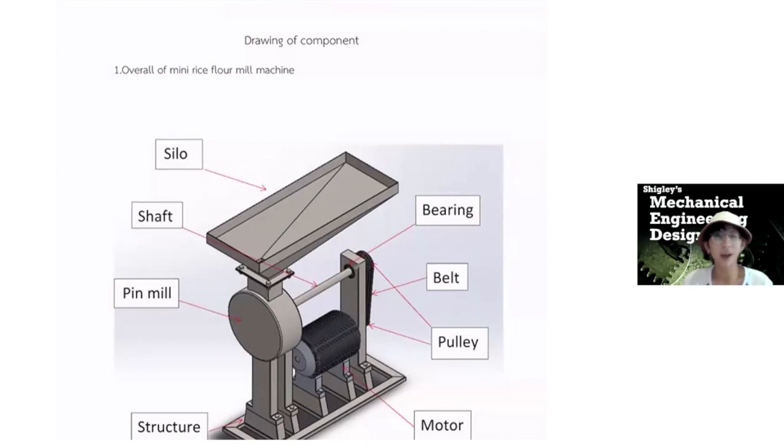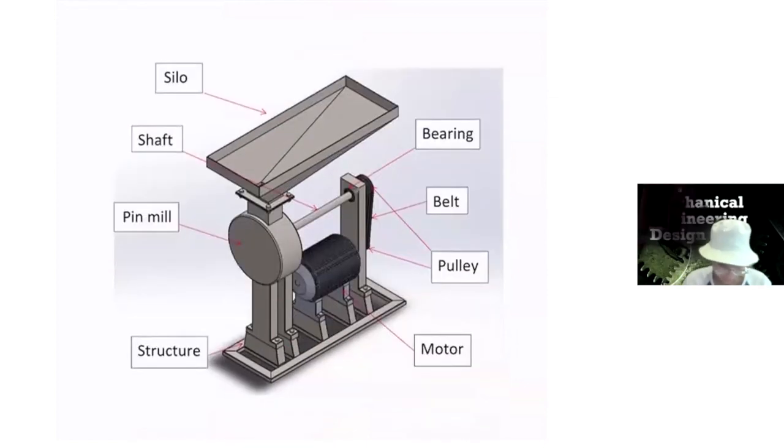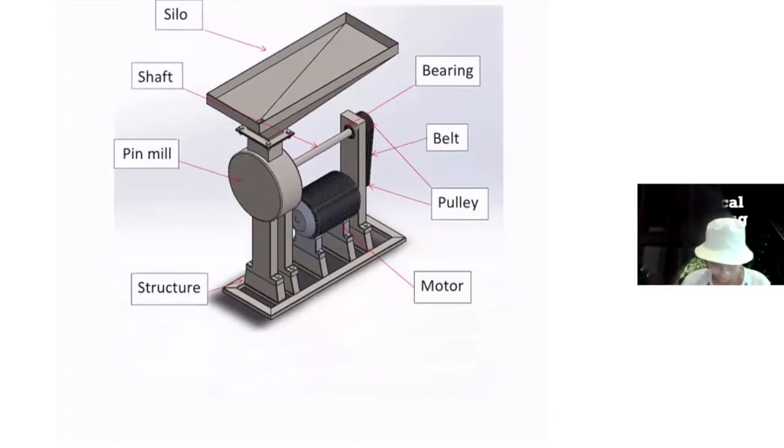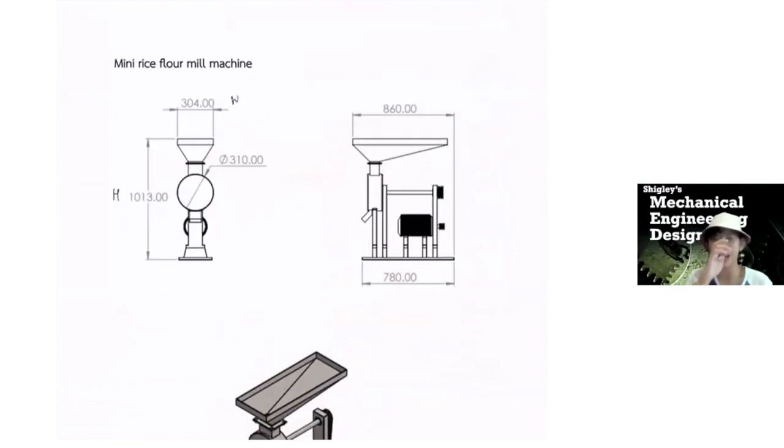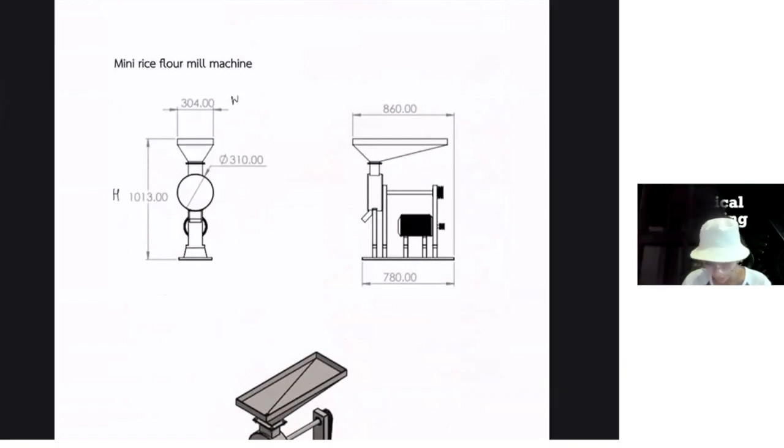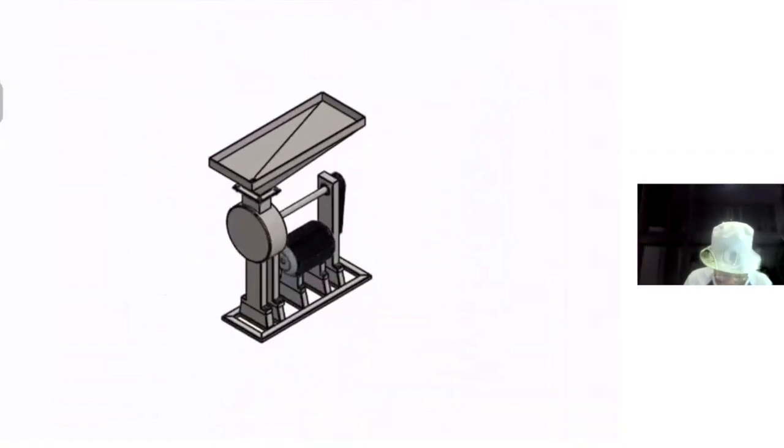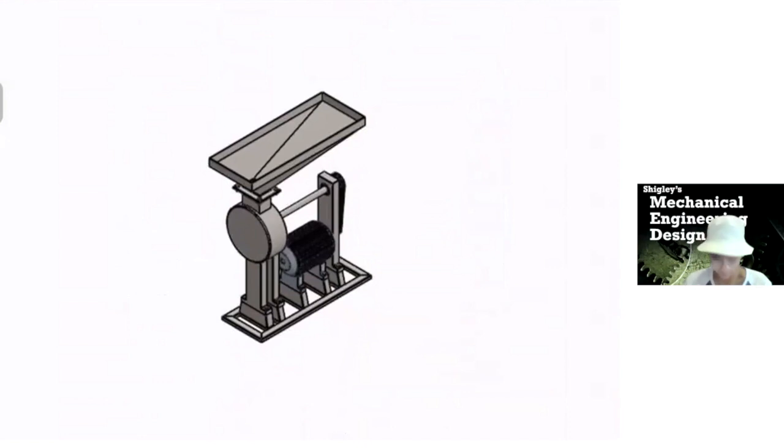It's overall of mini rice flour milling machine. It consists of silo, shaft, pin mill structure, motor, pulley, belt, and bearing. It has a more complex thing inside here. First start about mini rice flour milling machine. The fundamental things. The dimension is the height is 1013 and the width is 304 mm and the length is 860. This is the dimension of 3D dimensional figure.